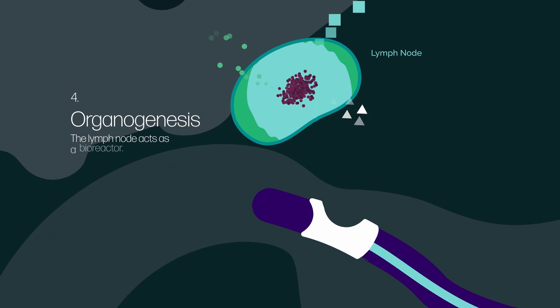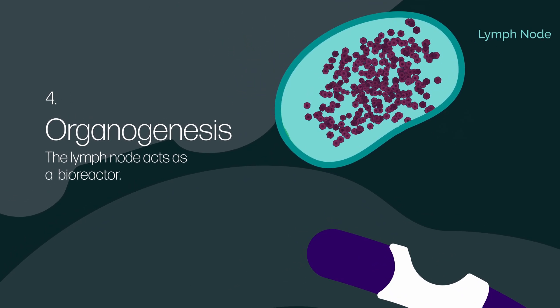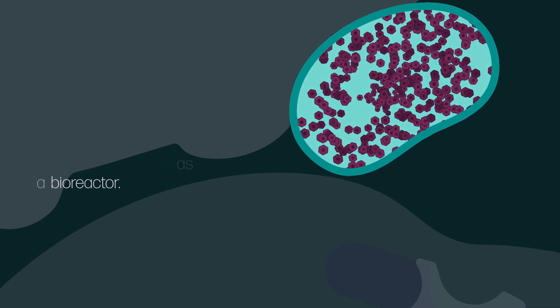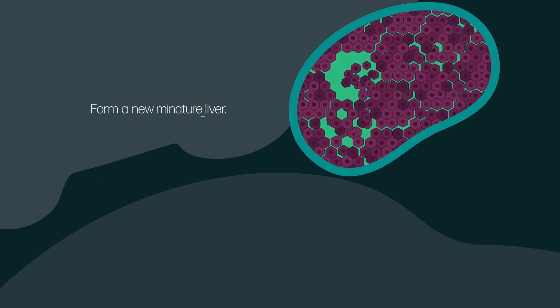The lymph node acts as a bioreactor for those cells, giving them a home where they can thrive, divide, and receive the pro-growth signals from the diseased liver and begin to form a new, miniature liver.